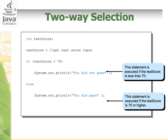Similarly, in a different example with a test score: if test score is less than 70, the statement 'you did not pass' will be shown; otherwise, 'you did pass.' We can also write it the other way around, where the if expression is test score >= 70 — then it displays 'you did pass,' and the else displays 'you did not pass.' Both give the same result. The only difference is the condition — it all depends on which way you prefer when writing the code.